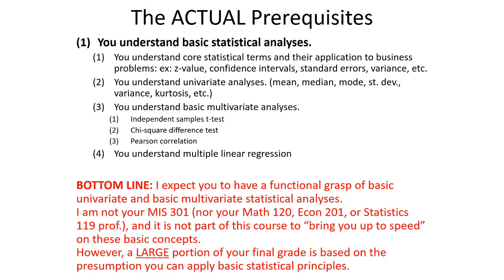The next real prerequisite is the one that many students are challenged by. When you enter this course, because of your prerequisites, that means you understand basic statistical analyses — terms like z-value, confidence interval, standard errors, variance — and you understand the importance of random sampling. You understand basic univariate analyses such as mean, median, mode, variance, kurtosis, and so on. And most importantly, you understand how to do multivariate analyses such as the independent samples t-test, the chi-square difference test, and the Pearson correlation. Since one of the responsibilities of the marketing researcher is to conduct proper analysis of the data collected, that clearly implies you should have a functional knowledge of statistical tests that are appropriate.